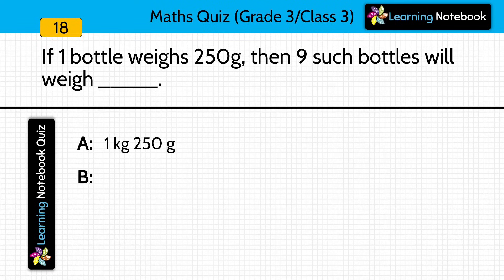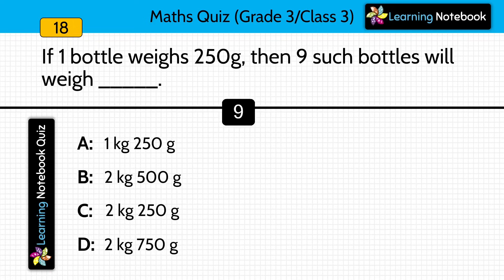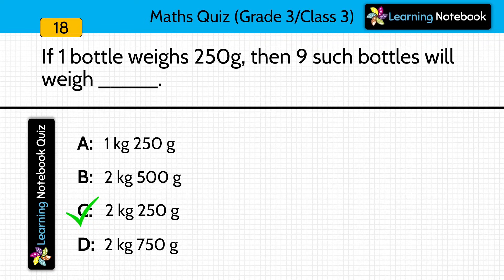Question seventeen: if 1 bottle weighs 250 grams, then 9 such bottles will weigh how much? Answer is 2 kilograms, 250 grams. If we multiply 250 by 9 we get 2,250 grams, which equals 2 kilograms 250 grams.